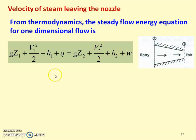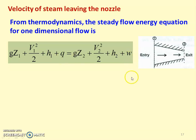Here, Z1 and Z2 are the heights of the inlet and exit sections from the datum. V1 and V2 are the velocities at entry and exit. H1 and H2 are the enthalpies of the steam at entry and exit. Q is the heat transfer across the nozzle and W is the work done.